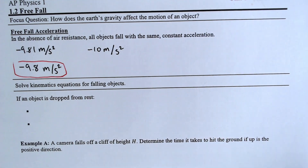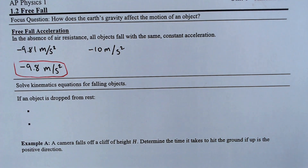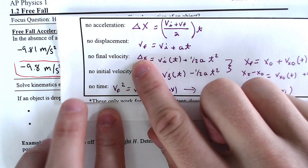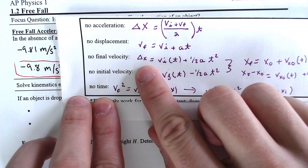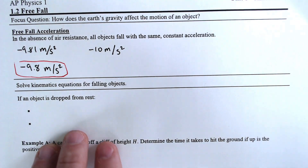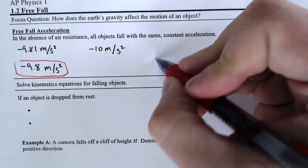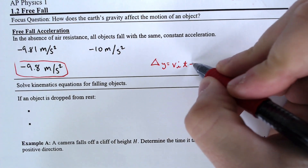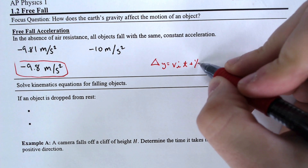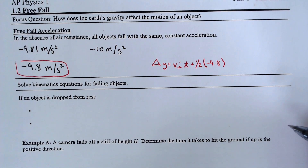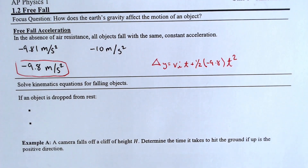We're going to be using a kinematic equation. You could technically use all of the ones we had before, but the one that typically gets used is delta x — which in this case is going to be delta y — equals vi times t plus one-half at squared. Delta y, the change in y, is equal to vi times t plus one-half times a, which is negative 9.8, times t squared. That is the formula we'll be using for the majority of the problems today.